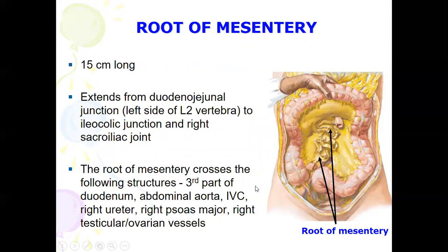The root of the mesentery crosses the following structures: the third part of the duodenum, the abdominal aorta, the inferior vena cava, the right ureter, the right psoas major, and the right testicular or ovarian vessels.